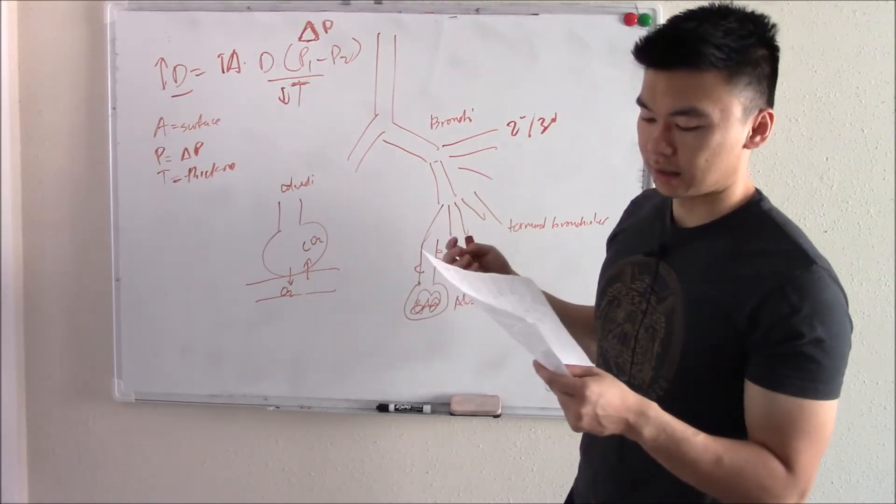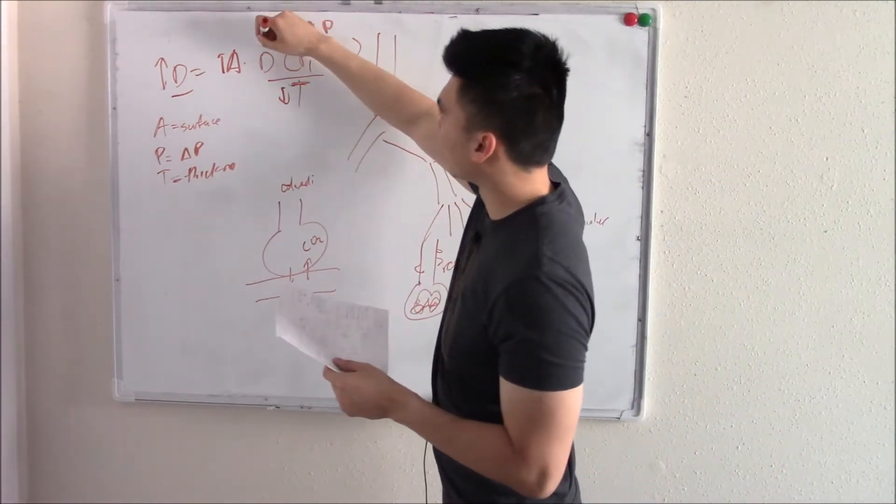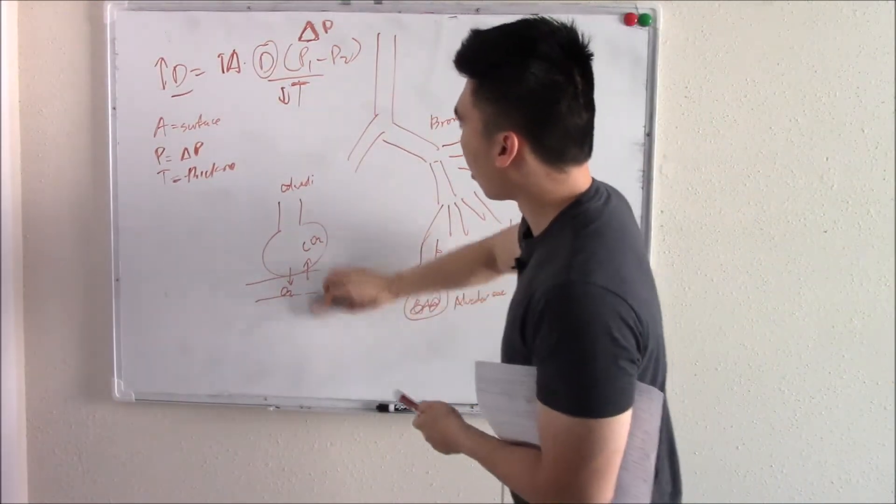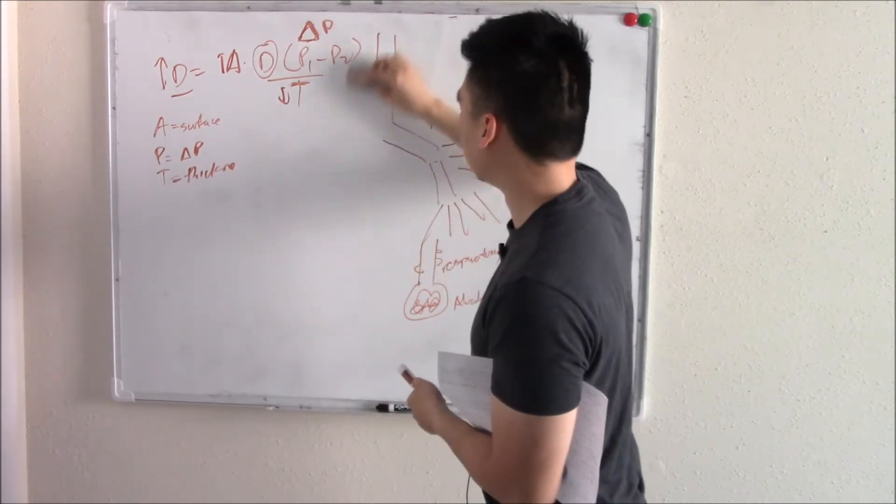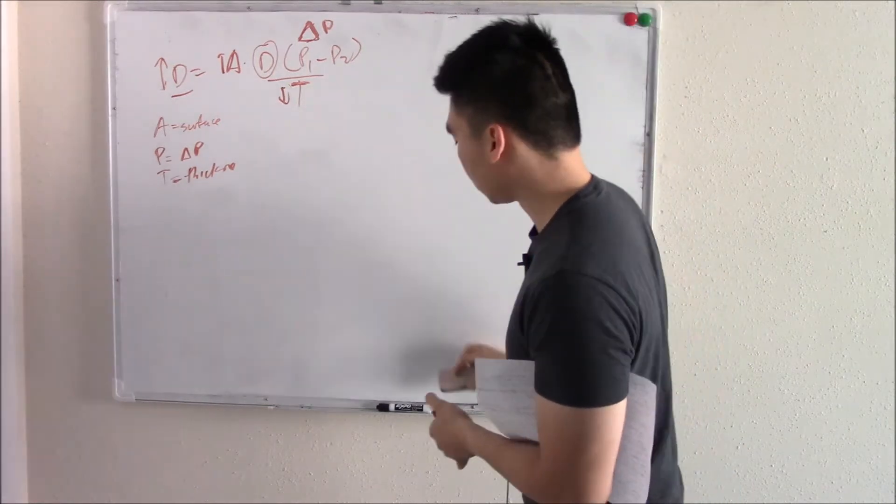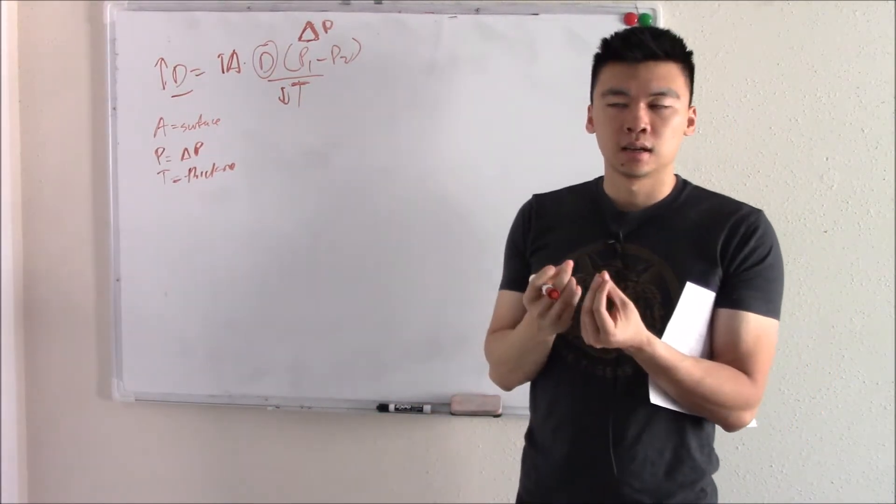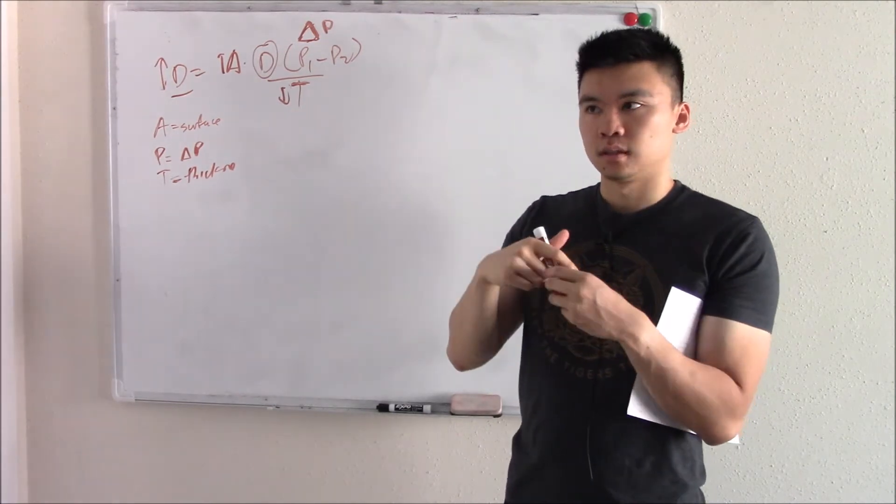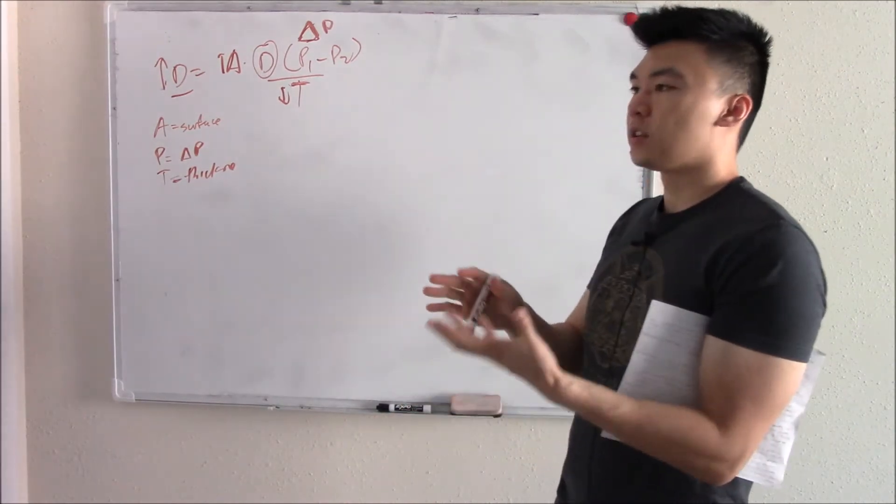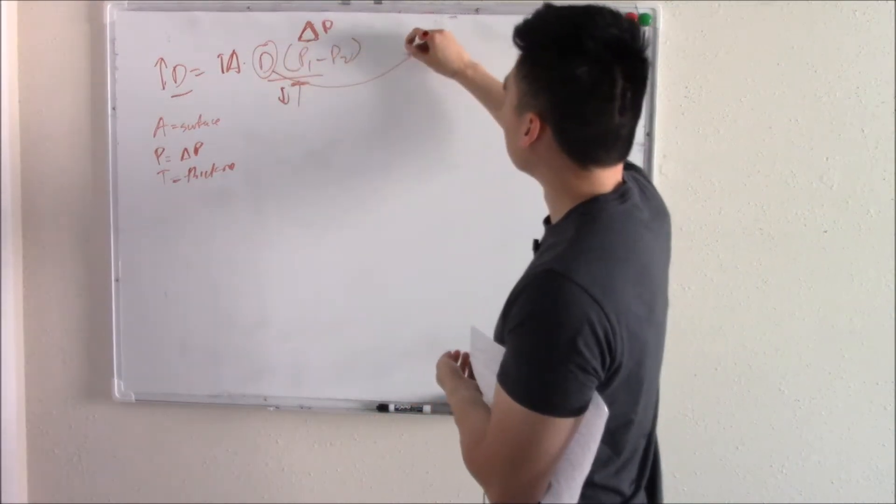Now, I skipped over one thing. I skipped over D. What the heck is D? Gases, all different types of gases have their own natural ability to diffuse. Some gases diffuse quicker than the others. Some gases diffuse slower. That's just an inherent natural characteristic of the gas. So some gases diffuse a lot quicker. Some diffuse really, really slowly. So let's just take this and look at it in a little bit more detail.